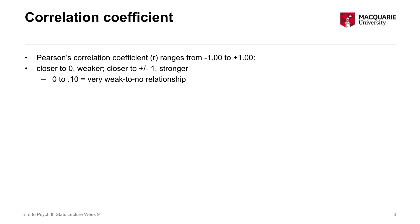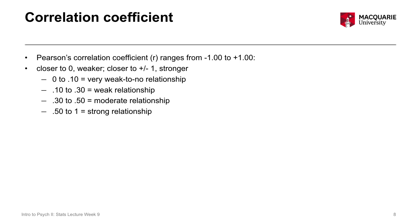These rules of thumb are in absolute values — it doesn't matter if it's positive or negative, the absolute value is the same representation of the strength of the relationship. A correlation from 0 to 0.1 means a very weak to no relationship. A correlation from 0.1 to 0.3 represents a weak relationship. From 0.3 to 0.5 is a moderate relationship, and anything above 0.5 is generally considered a strong relationship. Keep in mind these are just rules of thumb — a correlation of 0.49 is not meaningfully different to 0.51. The delineation between categories is really just lines in the sand. The closer to 1, the stronger the effect; the closer to 0, the weaker the effect.